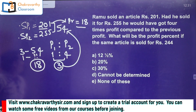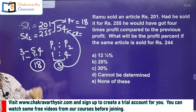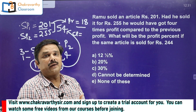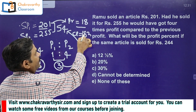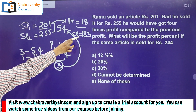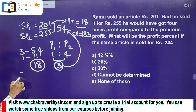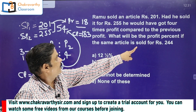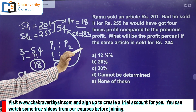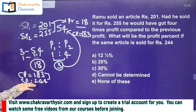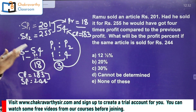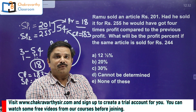Selling price is 201, profit is 18 rupees. Cost price is 201 minus 18. That is 183 rupees. This cost price of 183 applies to all three cases. Now if the article is sold at 244 rupees, the profit is 244 minus 183. Let's calculate: 183 plus 17 is 200, then 200 plus 44 is 244, so profit is 61 rupees.